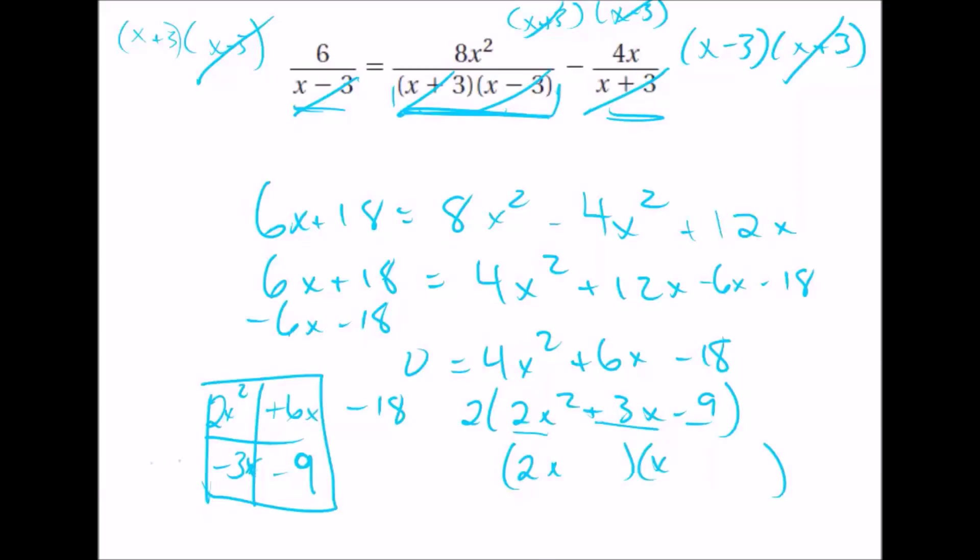We're just going to factor out the rows, so minus 3 from here, 2x, x, and looks like 3. So x plus 3, 2x minus 3.